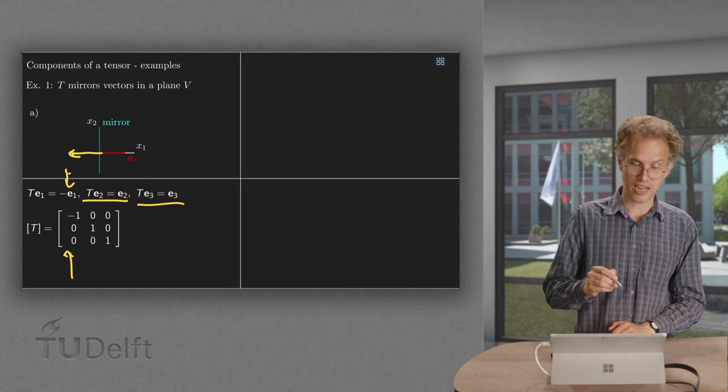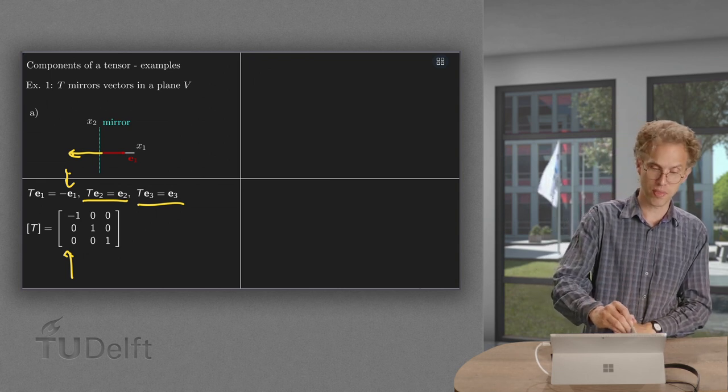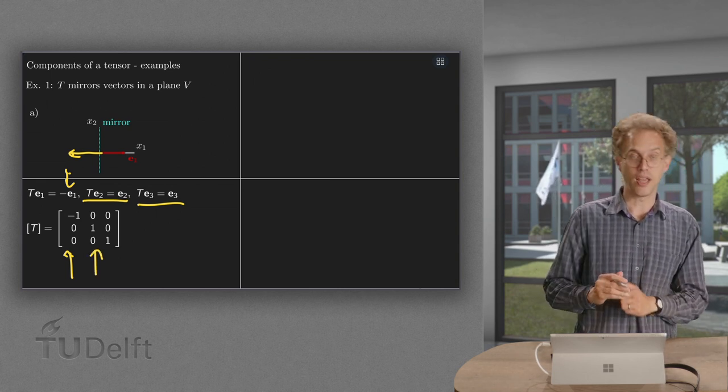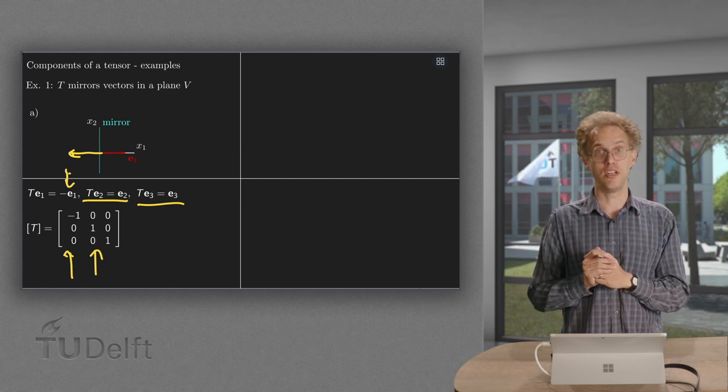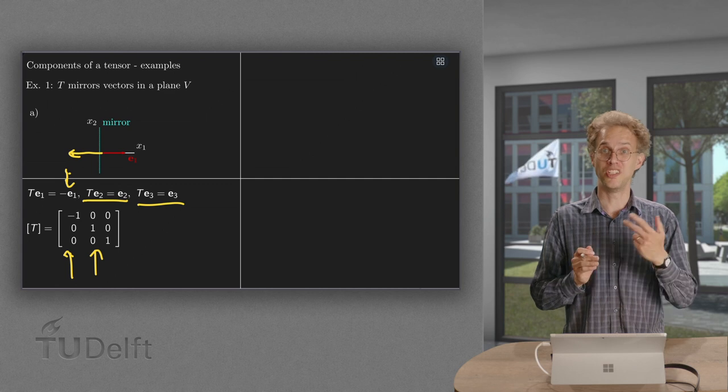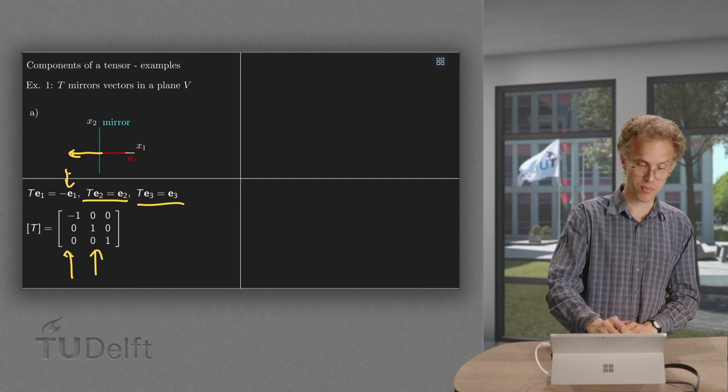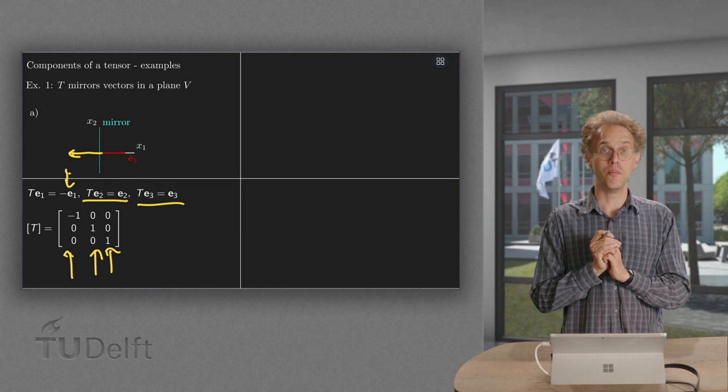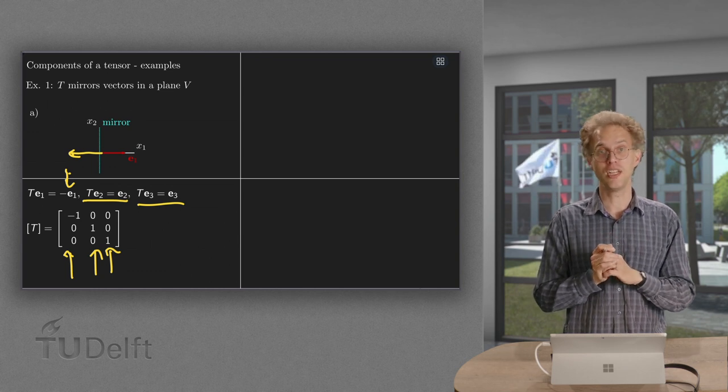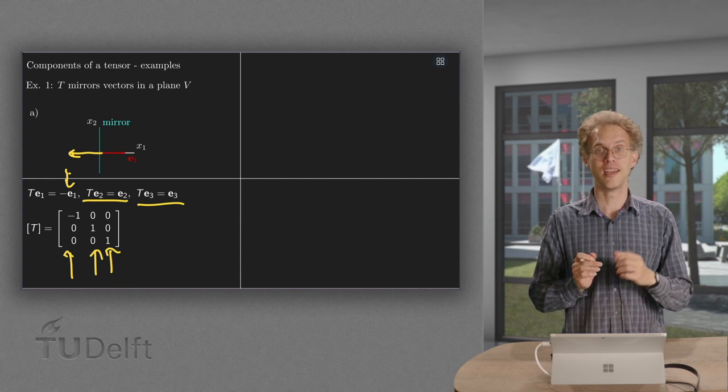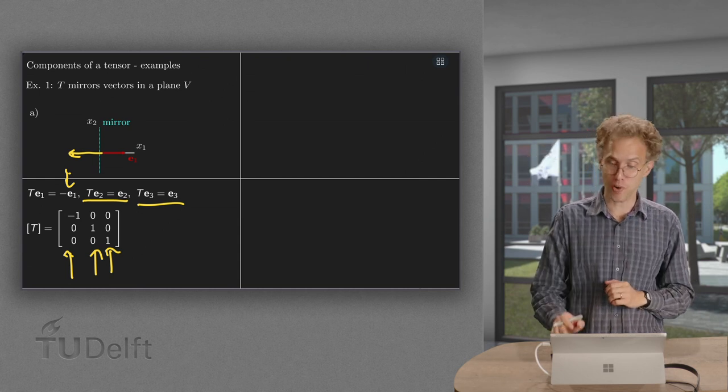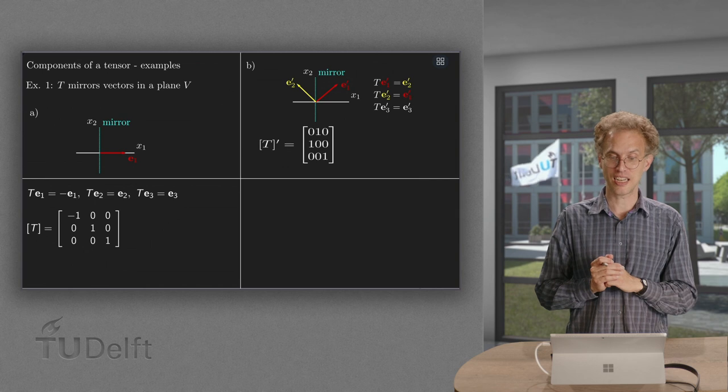Similarly for the second and third columns, the image of e2 is e2, so that is 0 times e1 plus 1 times e2 plus 0 times e3, and similarly for the third one. So there we have the matrix of our tensor T with respect to the basis e1, e2, e3, and this basis is important. That's what we'll see in the second example.